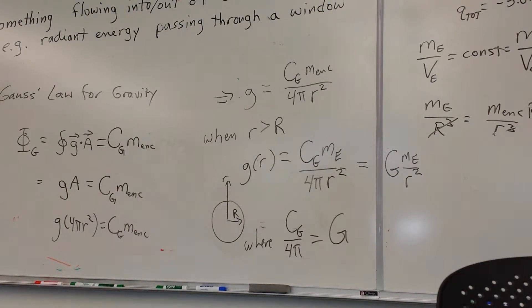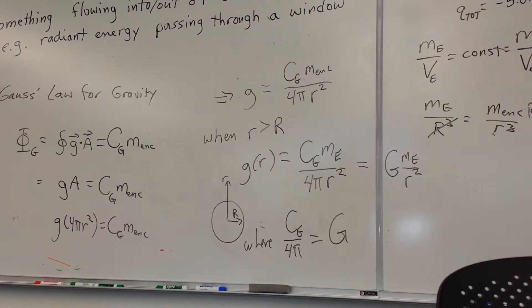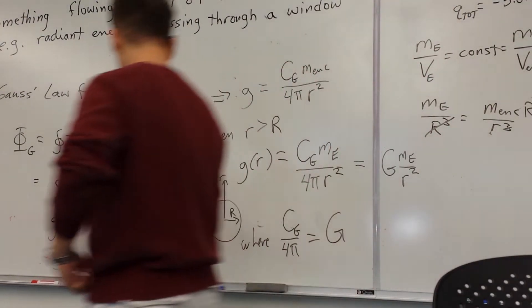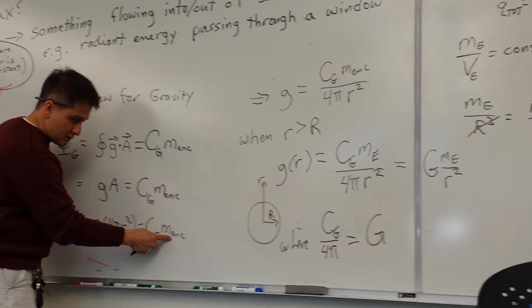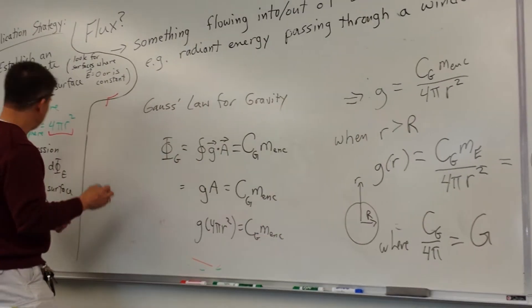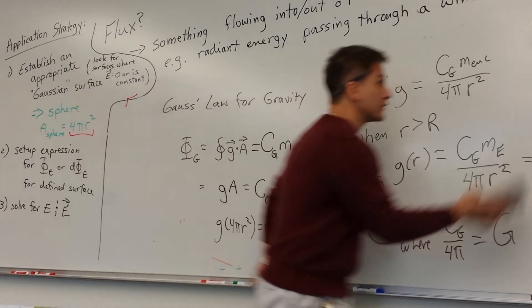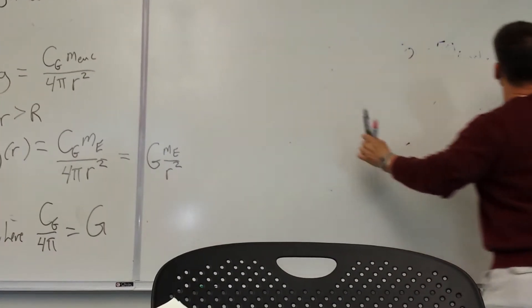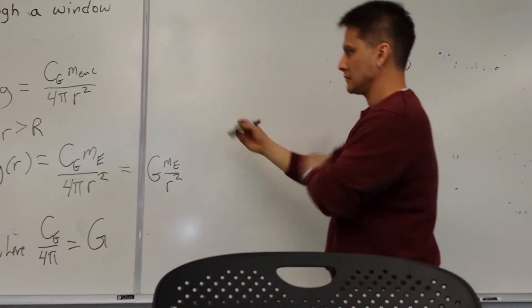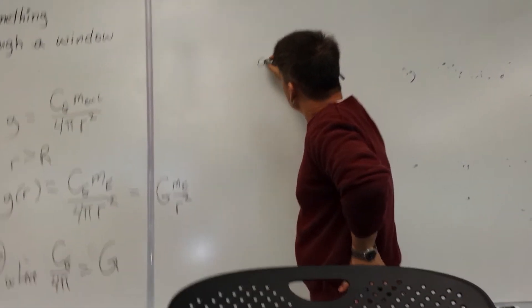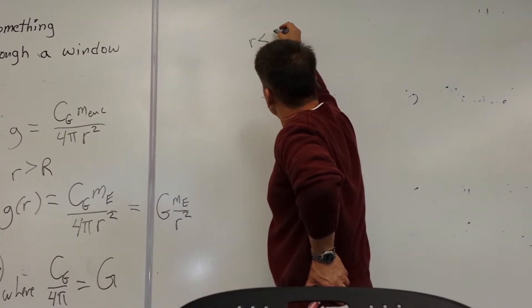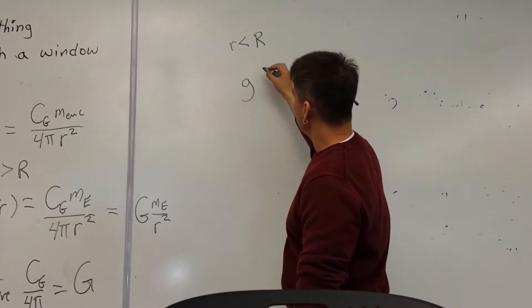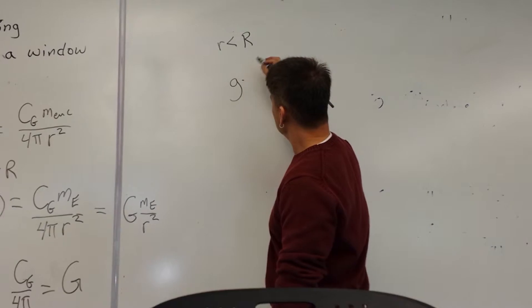Now M_enclosed is where we run into the issues. So over here again we have M_enclosed when R is less than the radius of the Earth.